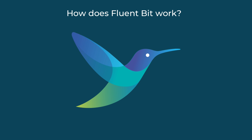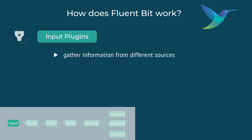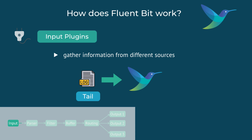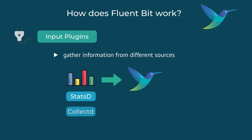So how does FluentBit work? FluentBit uses input plugins to read the logs from the data sources. For example, if you need to read log files, you need a plugin to read from log files. If you're going to receive messages over TCP, you need an input plugin that listens for messages over TCP. FluentBit supports many different input sources, and also has input plugins for metrics data collection — for example, it supports StatsD and collectd input plugins, but also supports collecting metrics on the host system's CPU, memory, and disk.